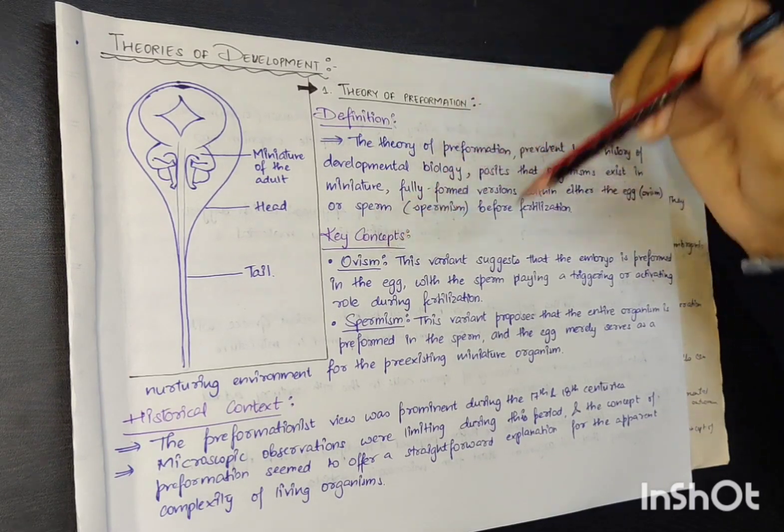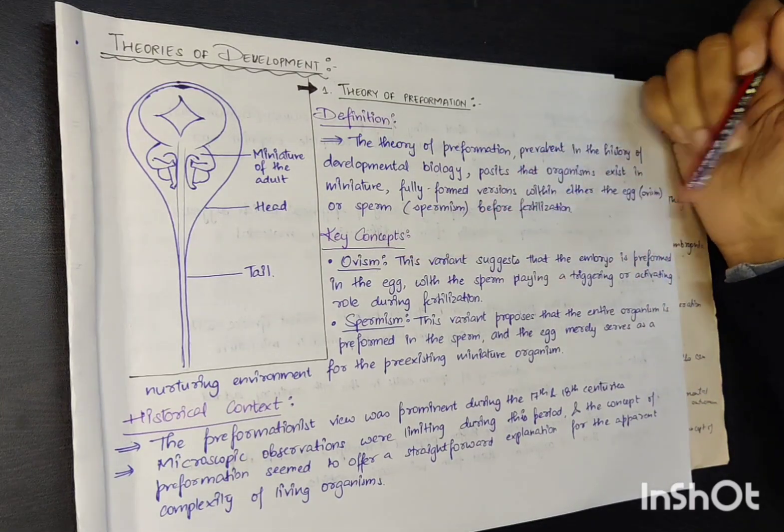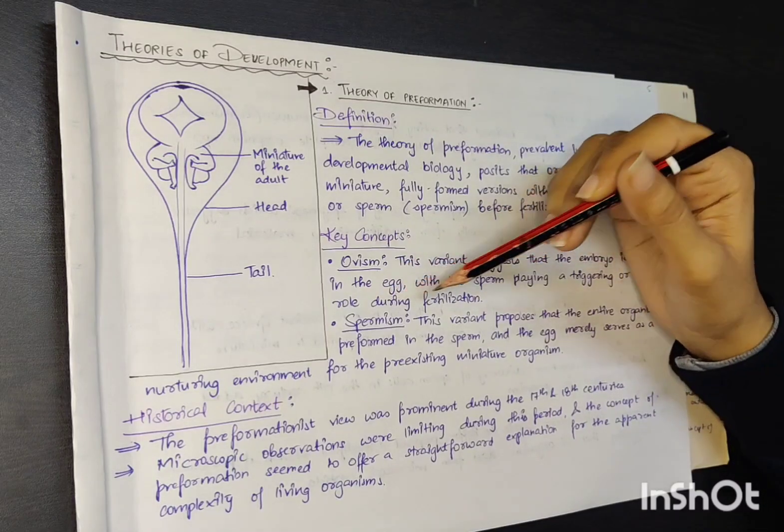Key concepts: Ovism. This variant suggests that the embryo is pre-formed in the egg, with the sperm playing a triggering or activating role during fertilization.